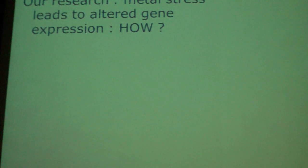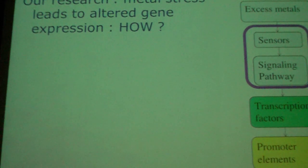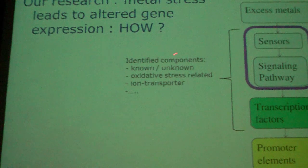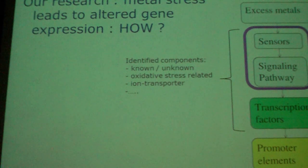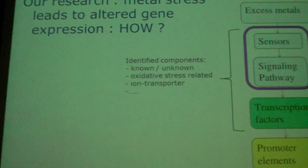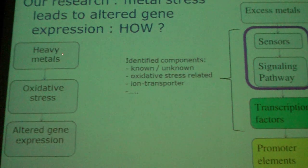To summarize: metal stress leads to altered gene expression. I have shown how we can use reporter genes — specifically promoter-reporter fusions with deletion constructs to discover promoter elements, yeast 1-hybrid screens to discover transcription factors, and forward genetics to identify components in this signaling pathway. When we identify these components, sometimes they are known proteins, sometimes unknown proteins, sometimes stress-related proteins or ion transporters. For example, if an iron transporter doesn't work, the plant may not take up the excess copper and therefore doesn't experience the stress. We use this methodology to find out how triggers and stress can alter gene expression.